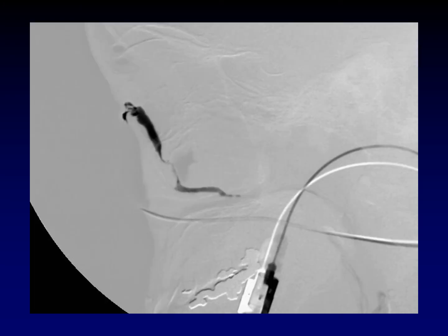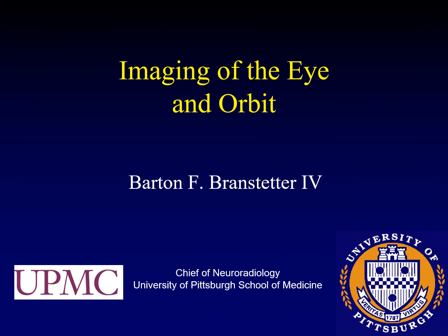This is an abnormal lateral projection of a dacryocystogram. You can see that the upper half of the nasolacrimal apparatus is dilated, and it suddenly tapers down to a very narrow segment in the bottom half. This is scarring and stenosis of the nasolacrimal duct with pre-stenotic dilatation. This concludes the lecture series on imaging of the eye and orbit.